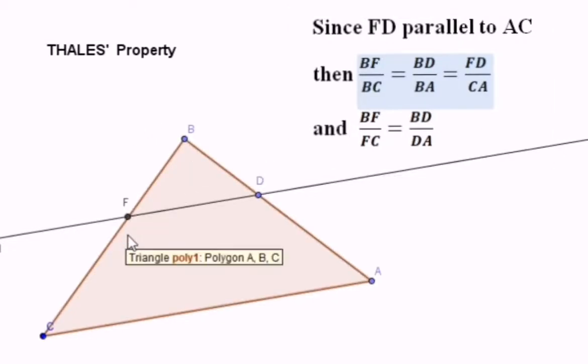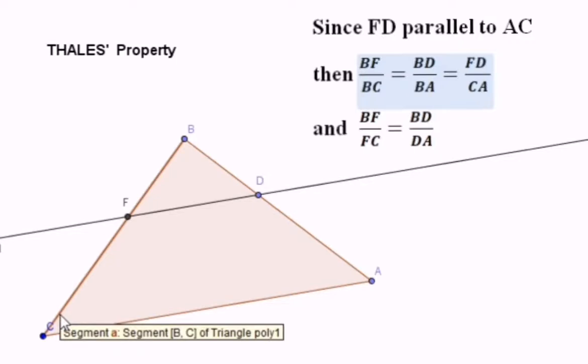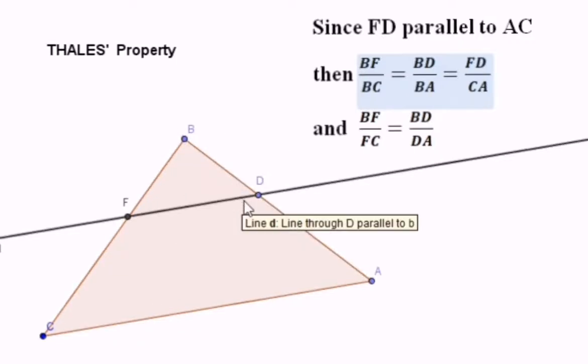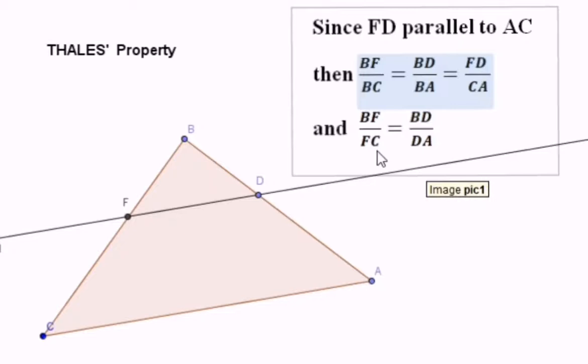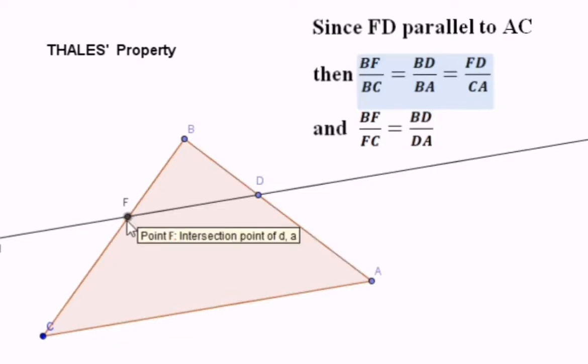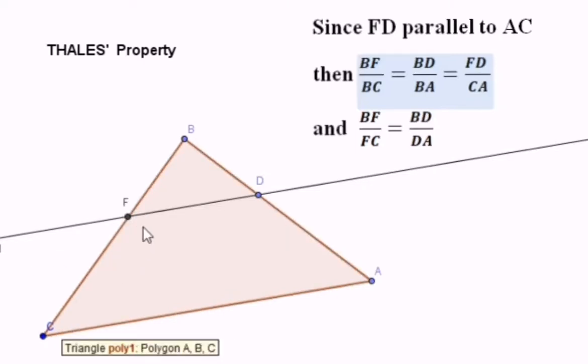It says that BF over FC is equal to BD over DA. Note that here we have only two ratios. This is one ratio, this is a second ratio. In the first case we have three ratios. Why here we have only two? Because FC is a part, it is not a side.